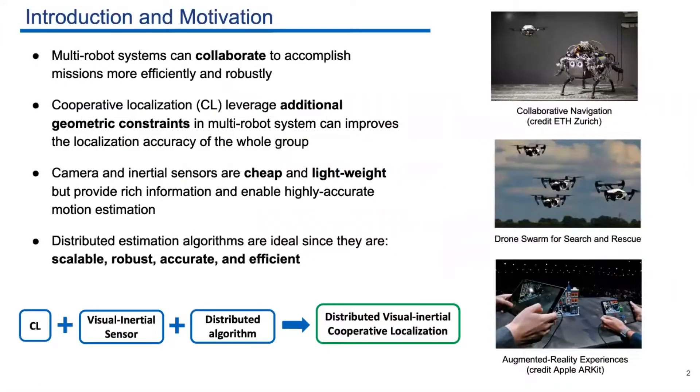Multi-robot systems that have the ability of communication and perception can collaborate to accomplish missions more efficiently and robustly. Cooperative localization is a technique that leverages additional geometric constraints in multi-robot systems to improve localization accuracy. Camera and inertial sensors are cheap and lightweight, but they can provide rich information that enables highly accurate motion estimation.